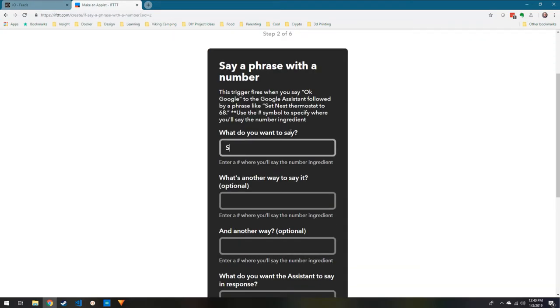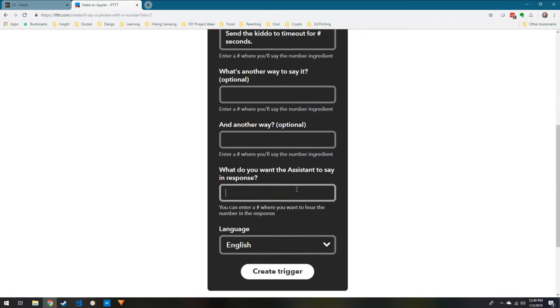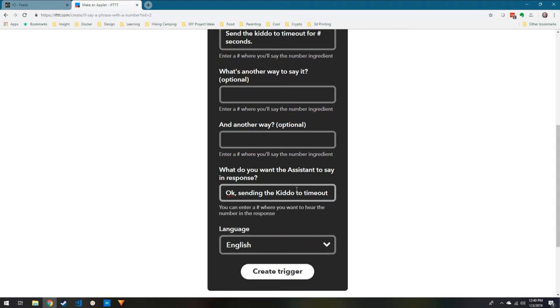We're going to choose simple phrase with a number. The phrase I'm going to use is, the kiddo needs to go to timeout for pound seconds. And then as a response, I want Google to reply, okay, sending the kiddo to timeout.